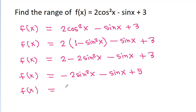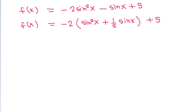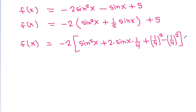Taking -2 common, f(x) = -2(sin²x + (1/2)sinx) + 5. We rewrite (1/2)sinx as 2·sinx·(1/4), then add and subtract (1/4)² = 1/16 inside the bracket to prepare for completing the square.